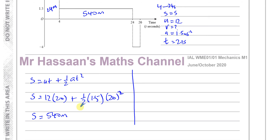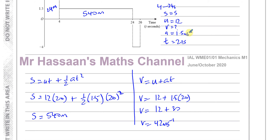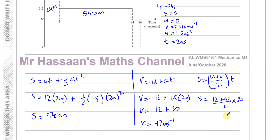Alternatively, finding the final speed first: v equals u plus at gives 12 plus 1.5 times 20 equals 12 plus 30 equals 42 metres per second. Then s equals (u plus v) over 2 times t gives (12 plus 42) over 2 times 20. That's 54 over 2 times 20, giving 27 times 20 equals 540 metres again. This method is preferable since we need the final speed for the next section anyway.